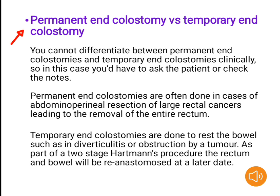Permanent end colostomy versus temporary end colostomy. You cannot differentiate between permanent and temporary end colostomies clinically, so in this case you do have to ask the patient or check the notes. Permanent end colostomies are often done in cases of abdominoperineal resection of large rectal cancers, leading to removal of the entire rectum. Temporary end colostomies are done to rest the bowel, such as in diverticulitis or obstruction by a tumor, as part of a two-stage Hartmann's procedure; the rectum and bowel will be re-anastomosed at a later date.